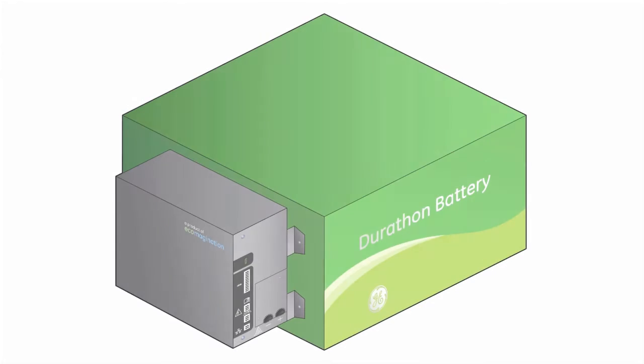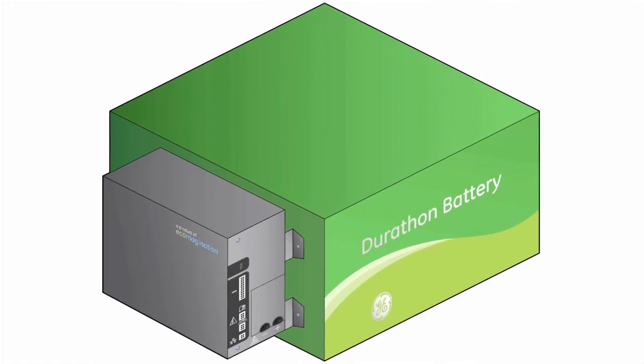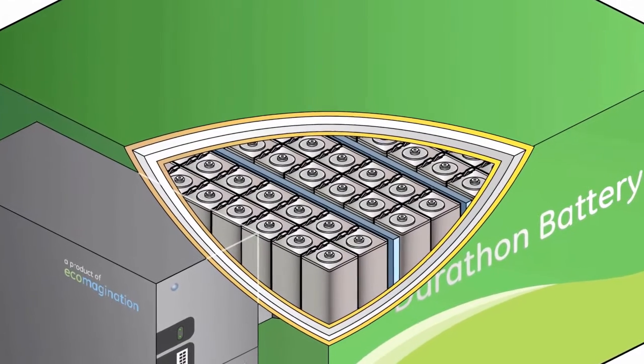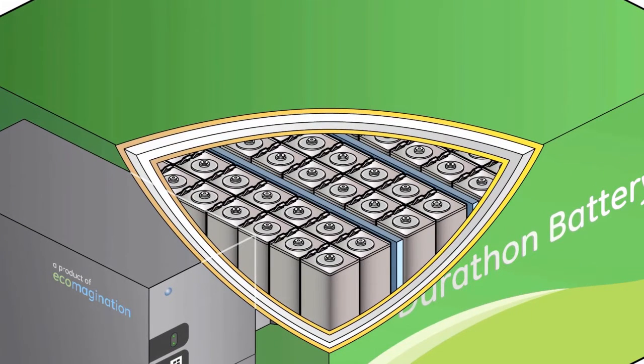Comprised of many cells, the Durathon battery module pictured contains over 200 cells, strung together in series, resulting in an energy-dense 550 volt battery.